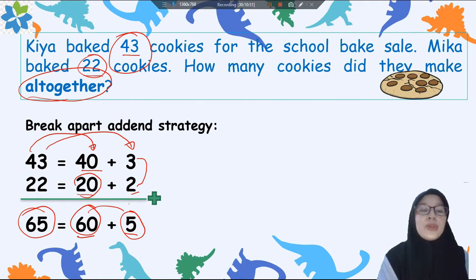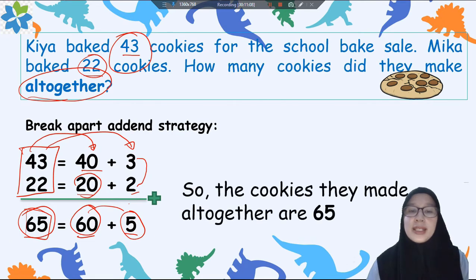Dari menjumlahkan ke bawah antara 3 dengan 2 hasilnya 5 and then 40 plus 20 equals 60 and the result is 65. Or you can try to add together from the numbers here: 3 plus 2 equals 5 and then 4 plus 2 equals 6 so the result is 65. And the conclusion is, the cookies they made all together are 65. I hope you got it.